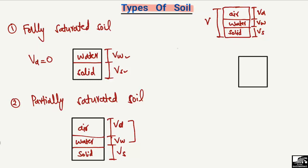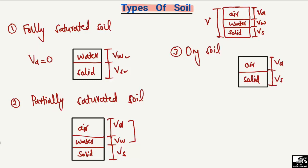The third type is dry soil. In dry soil, we have two components: solid and air. There is no water present — the volume of water is equal to zero in dry soil.